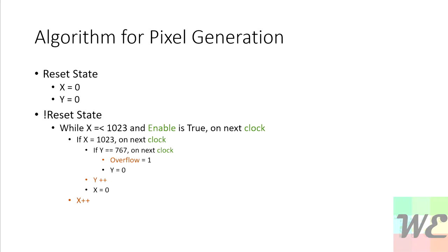When we're not in the reset state and it's clocking, while x is less than or equal to 1023 and enable is true, on the next clock we increment x. If x is equal to 1023, we increment y and clear x — we roll over x and increment y. Then if y is equal to 767, on the next clock we throw the overflow and set y equals 0.